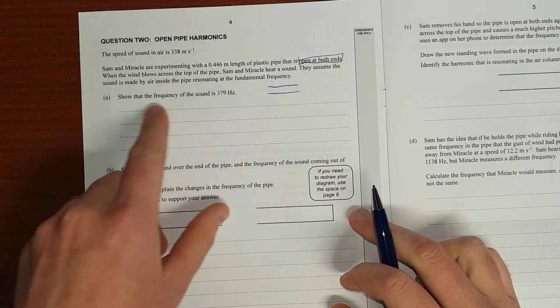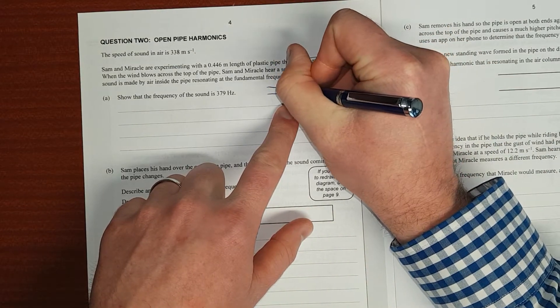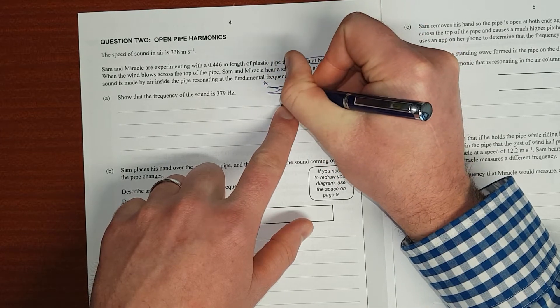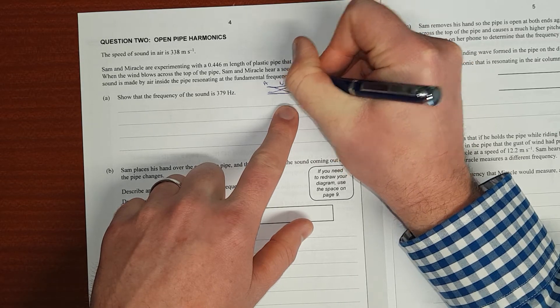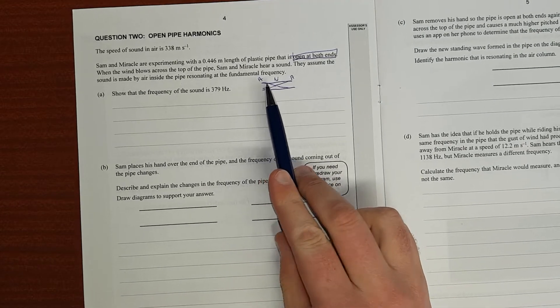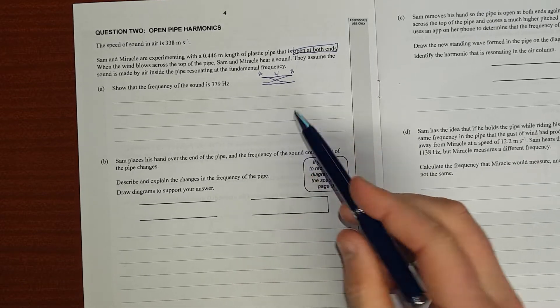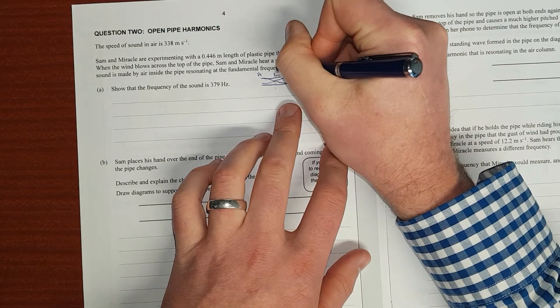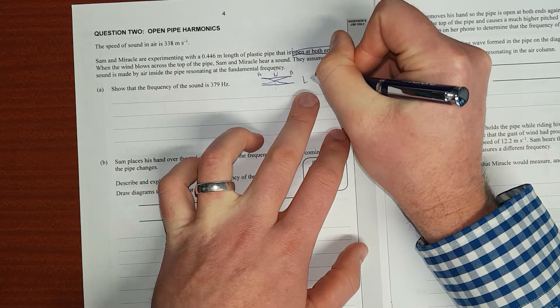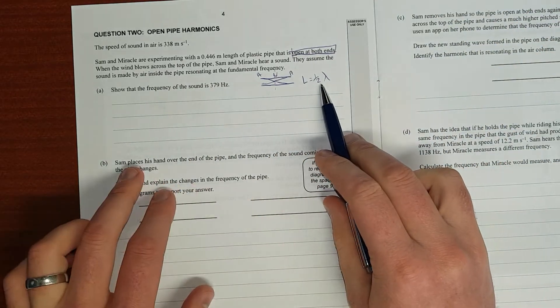Show that the frequency of the sound is 379 hertz. It's a fundamental frequency. So we have an open at both ends, it's an open-open. You're going to have an anti-node at the end, a node in the middle, and an anti-node at the other end. From node to anti-node is quarter of a wave plus another quarter of a wave. So the length is equal to half a wavelength.